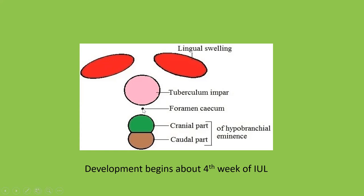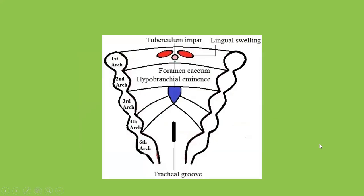In relation to the third and fourth pharyngeal arches, in the midline another swelling appears called the hypobranchial eminence. This hypobranchial eminence shows subdivision into a cranial part, shown in green color, and a caudal part, shown in brown color. The cranial part is called the cupola, while the caudal part is destined to form the epiglottis. This comprehensive figure shows the location of the lingual swellings, tuberculum impar, foramen cecum, and hypobranchial eminence in relation to the arches.